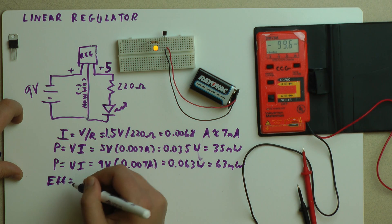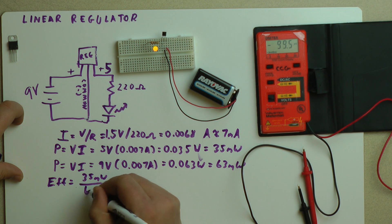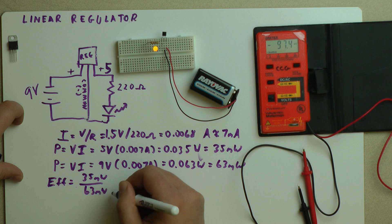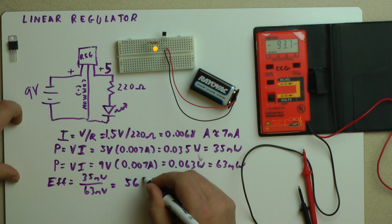So what's the efficiency here? Our efficiency is equal to the output wattage over the input wattage, which is approximately equal to 56%.